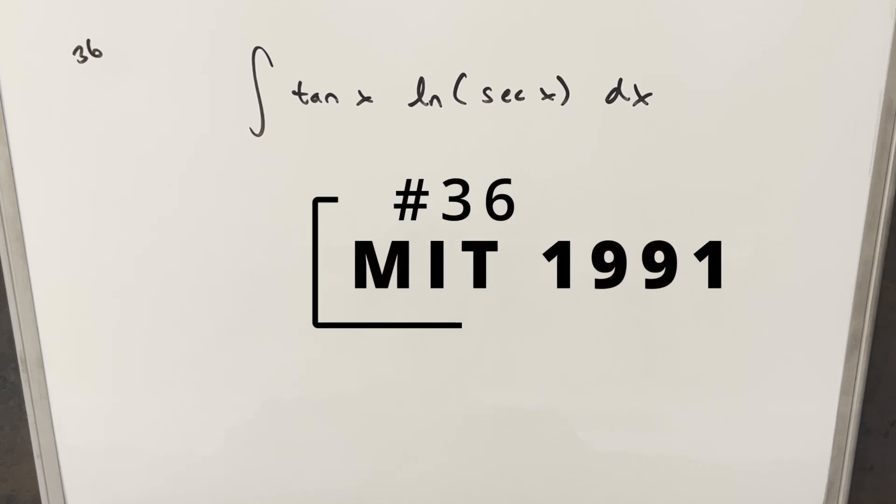We have here today another integral. This one's from the MIT integration B from 1991, problem 36. We have the integral of tan x times natural log secant x dx.